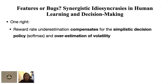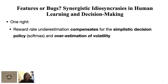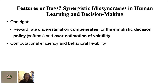The reward rate underestimation can compensate for the use of a simplistic decision policy and overestimation of volatility to earn more rewards. We simulated sequences of choices and outcomes with different models, varying the prior mean from 0 to 1. While the optimal model achieves the highest accumulated reward with the true prior mean, when using an overestimated volatility or a simplistic decision model, the model achieves more reward with a lower prior mean. The combination of these three idiosyncrasies allows humans to achieve near-optimal performance while reaping the benefits of computational efficiency and behavioral flexibility.